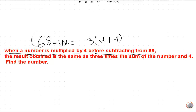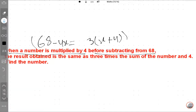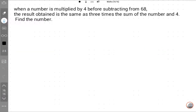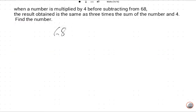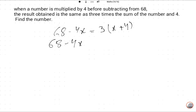This is the corresponding equation. Now we will solve on the next page: 68 minus 4x is equal to 3 into (x plus 4), so 68 minus 4x is equal to 3x plus 12.